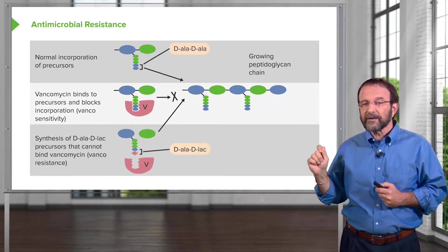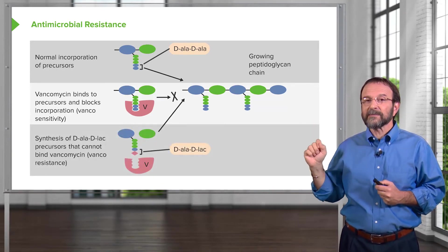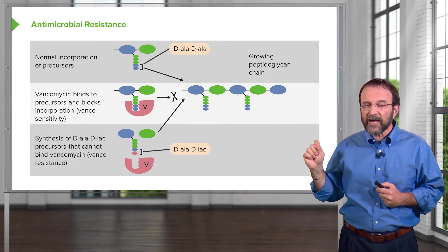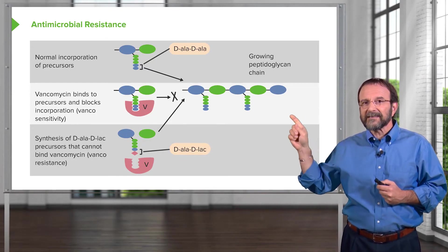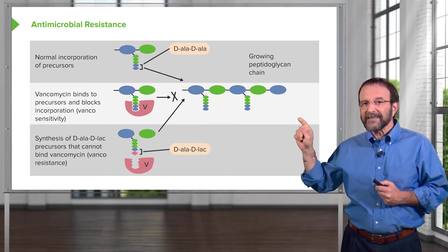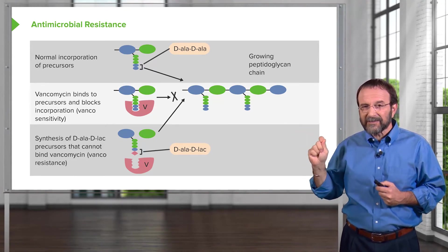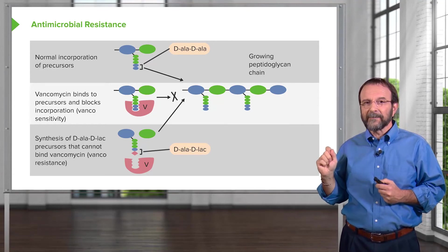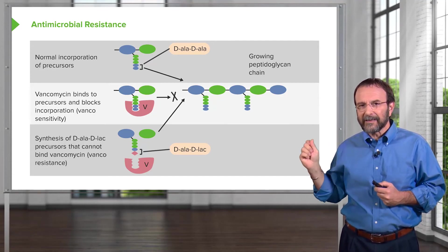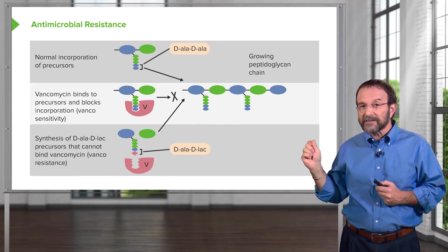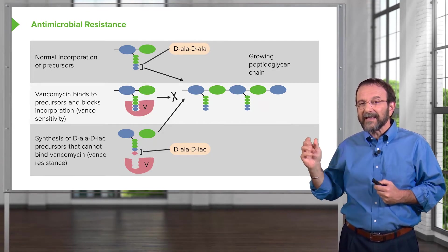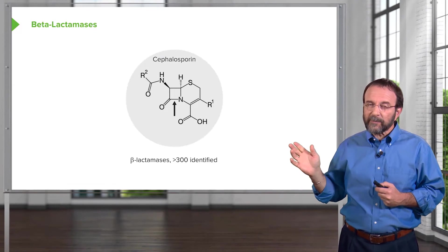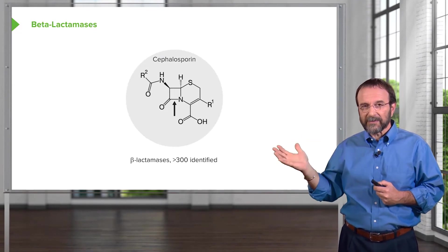One mechanism of resistance to vancomycin is that the bacterium changes D-ala-D-ala to D-ala-D-lac, and lactate can be incorporated into the chain instead. This evades vancomycin binding, and the antibiotic no longer works. That's one example of the way resistance works.